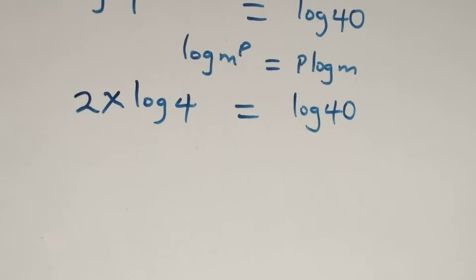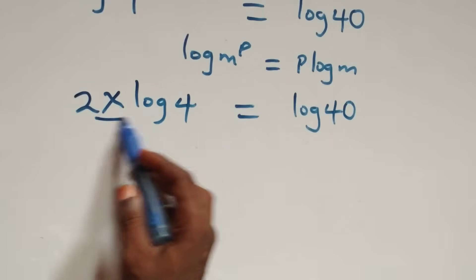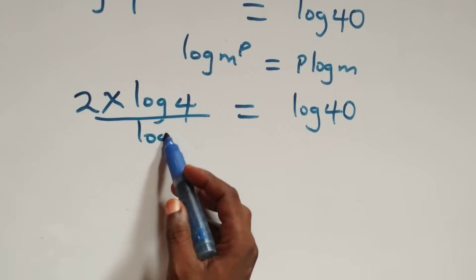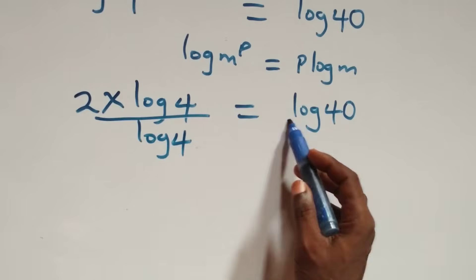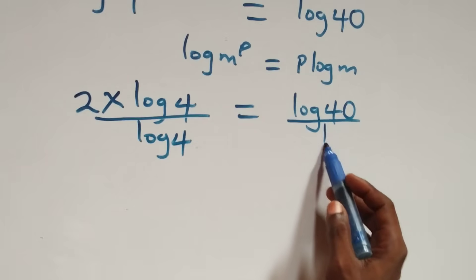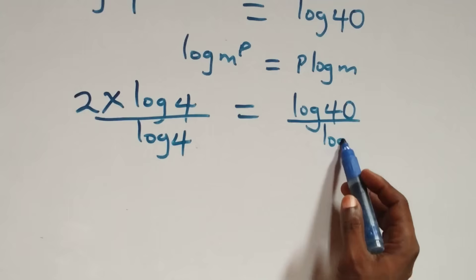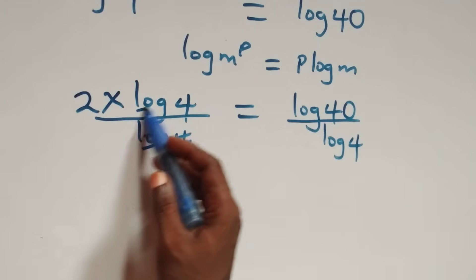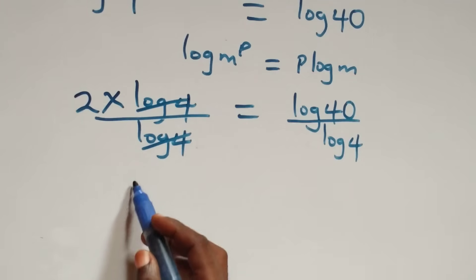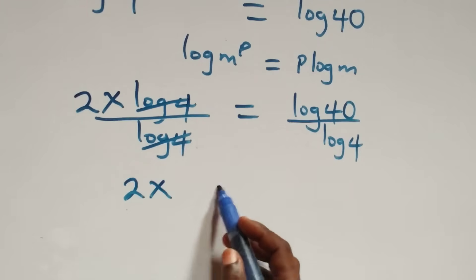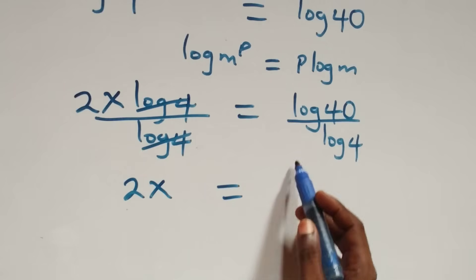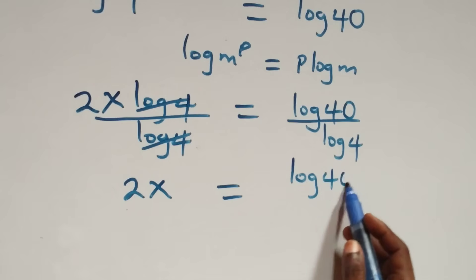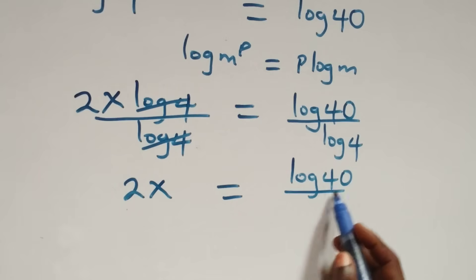Next step: we divide both sides by log four. Log four cancels each other, and we have two x left, which is equal to log forty over log four.